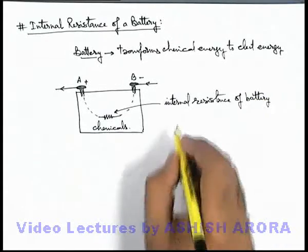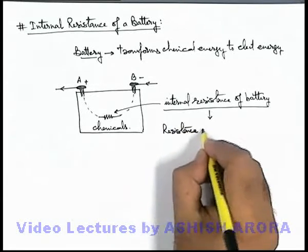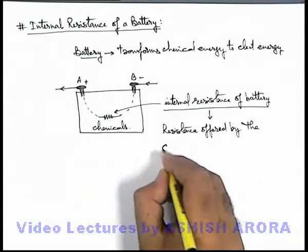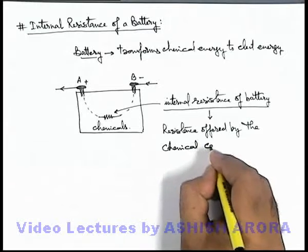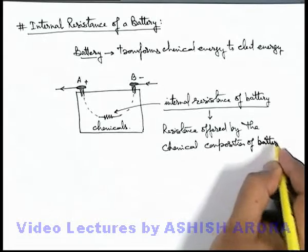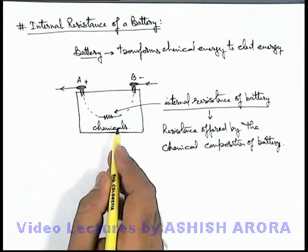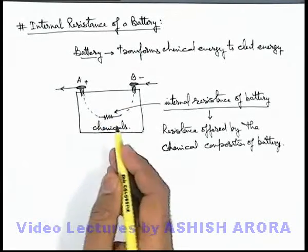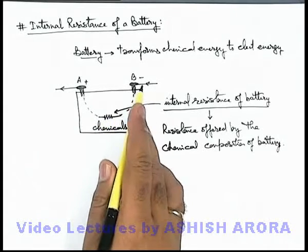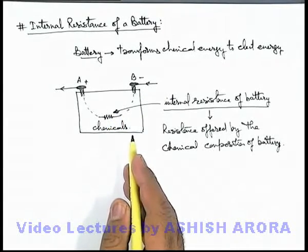The internal resistance is actually the resistance offered by the chemical composition of the battery. Whenever current passes through the battery, due to its flow within the chemicals — which is actually due to the flow of ions — the mobility of ions in the chemicals will not be as high as that of free electrons in a conductor. So it must offer some resistance, which will be higher than normal conductors or conducting wires.